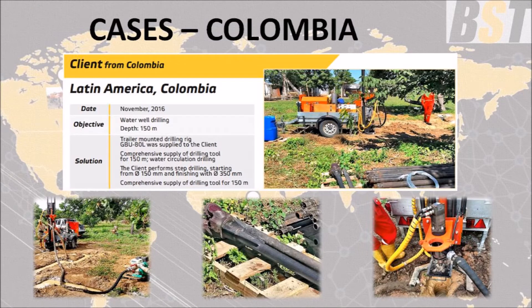The last case is shipment of a GBU-80L drilling rig to a customer in Colombia in November 2016. This customer is very experienced, having been in the drilling industry for a long time. He manages to drill with this machine up to 150 meters using fluid circulation drilling. Notably, he drills to a diameter of 350 millimeters using a step method — he starts at a diameter of 150 millimeters and step by step increases it to 350 millimeters, achieving 150 meters depth in this way.